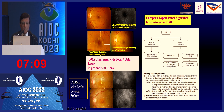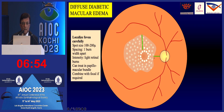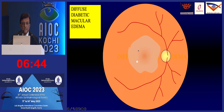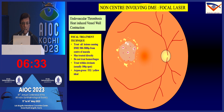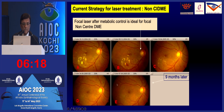Hence the importance of angiogram: even in center-involving DME, if the source of leakage is not within the center but elsewhere, those lesions can be lasered. The standard grid pattern involves staying about 500 microns from the fovea and 1500 microns from the disc, treating the zone from 500 to 3000 microns. The modified C-shaped grid and targeted focal laser of leaking lesions are available approaches, with good outcomes demonstrated over follow-up.